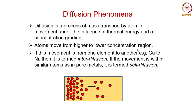Diffusion is a process of mass transport by atomic movement under the influence of thermal energy and a concentration gradient. Matter moves from the higher concentration to the lower concentration region. If this movement is from one element to another, for example copper to nickel, then it is called interdiffusion. If the matter transport is within similar atoms as in pure metals, then it is termed as self-diffusion. There is a pictorial here where red dots indicate the atoms, which in turn indicate the concentration of matter at a particular region.